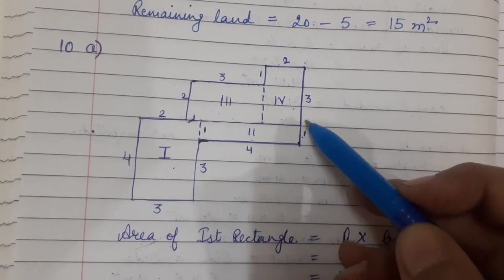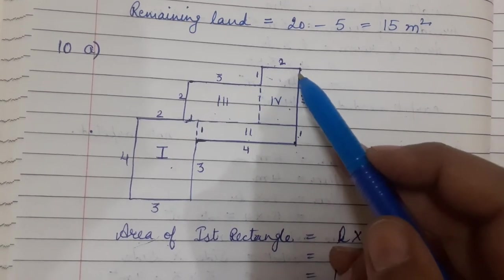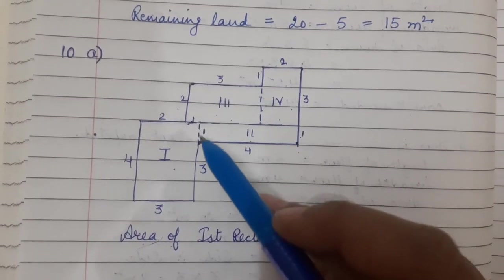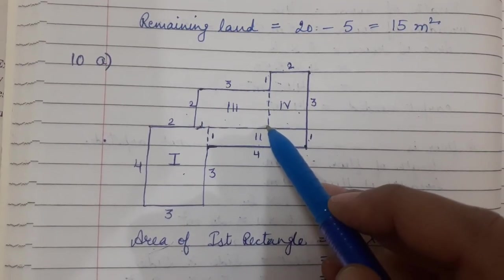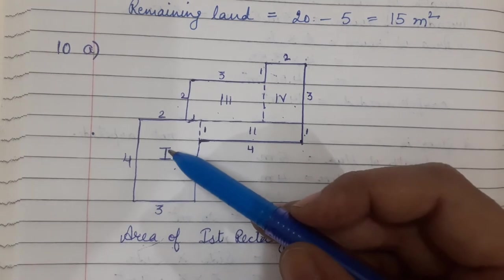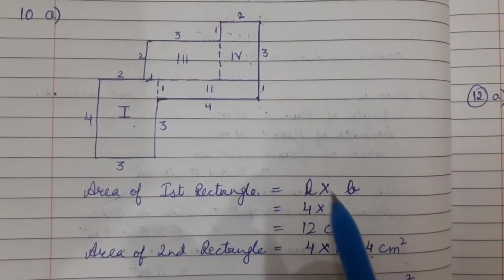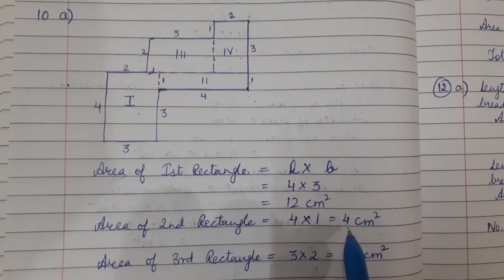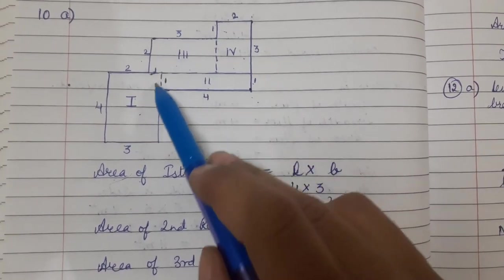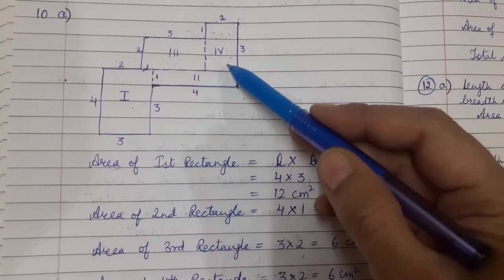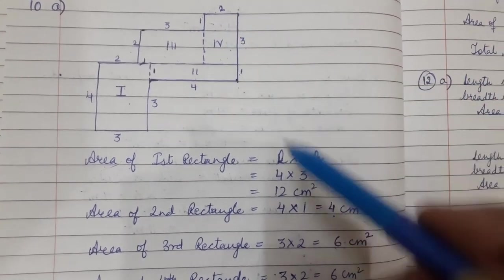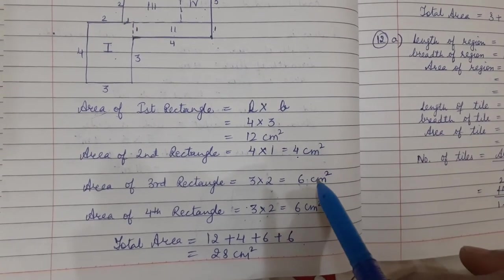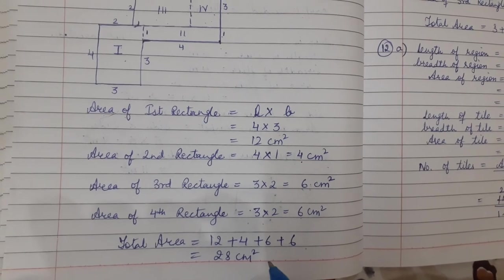The dimensions are: this side is 3, this is 3, this is 1, this is 2, and this is 1, and this is 2 — so the opposite side is also 2 as it is a rectangle. If this total is 3, the area of the first rectangle is 4 × 3 = 12. Area of the second rectangle is 4 × 1 = 4. Area of the third rectangle is 3 × 2 = 6. Area of the fourth rectangle is 3 × 2 = 6. Total area = 12 + 4 + 6 + 6 = 28 cm square.